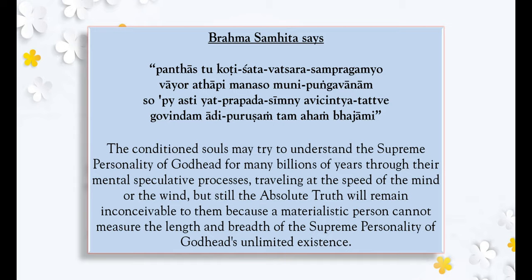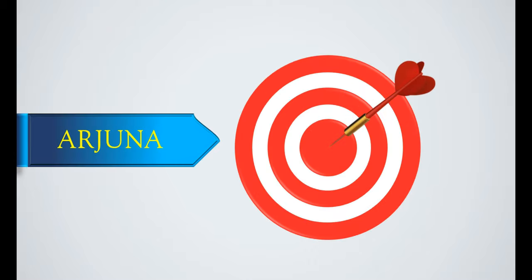Just like Arjuna. Arjuna, in the battlefield of Kurukshetra, was completely bewildered. He was one of the greatest archers, if not the best archer in the world. But still, in the battlefield of Kurukshetra, where there was 64 crore army personnel,